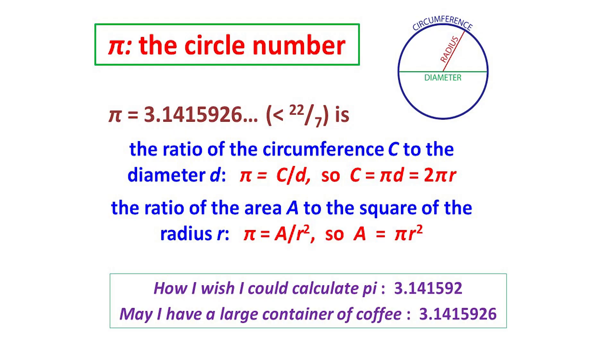If you can't remember these first few digits of pi, here are two sentences that might help. In each sentence, the numbers of letters in the words give you the digits. So counting the letters in the words, 'How I wish I could calculate pi,' gives you 3141592. And similarly, for the other sentence.